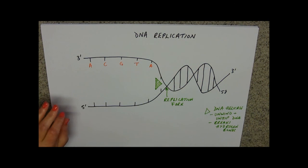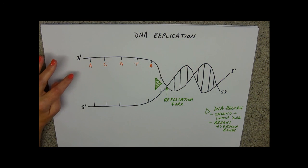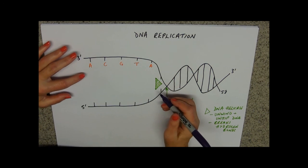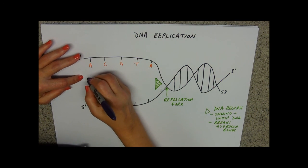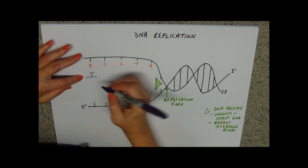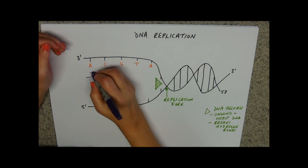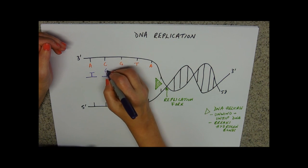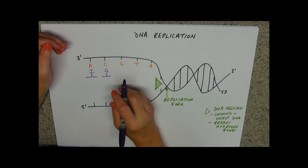What happens at this end of the molecule is that we bring in new nucleotides with the complementary base. So this one will be T and I'll bring in the next one and it will have the complementary base G on it.